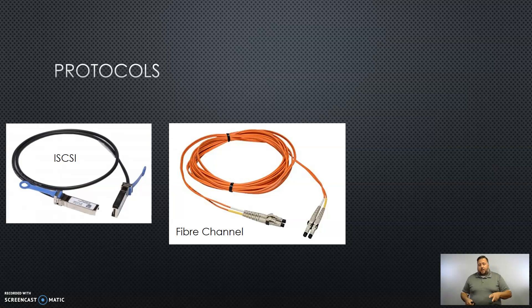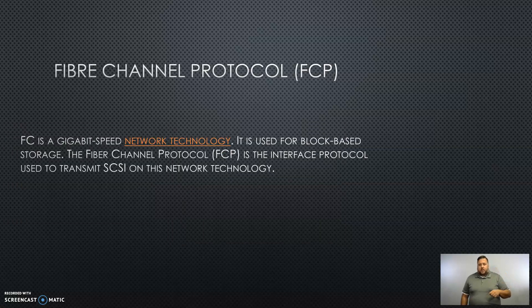Let's talk about the two main protocols that make up the marketplace right now: iSCSI and Fiber Channel. Fiber Channel uses light; iSCSI uses copper. The Fiber Channel protocol is a gigabit speed — now even a multi-gigabit speed — network technology. Speeds go up to 800 gigabits per second as the maximum speed as of right now.